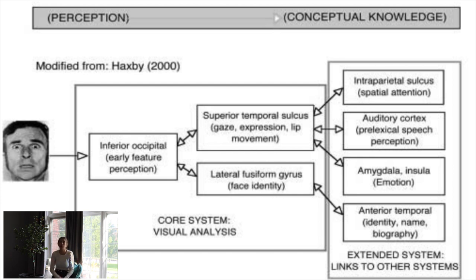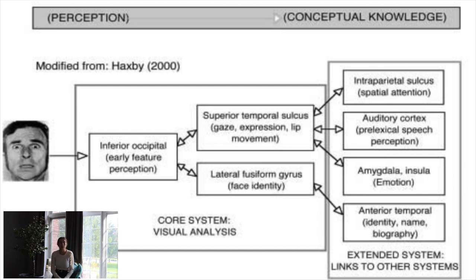For the emotional part, information is sent to the amygdala and the insula. The amygdala is an emotional area associated with fear, but also more positive emotions like happiness and surprise. The insula is more associated with disgust. These are limbic areas — emotional areas — where information is sent. That whole neuroanatomical structure was summarized in a paper by Haxby in the 2000s.